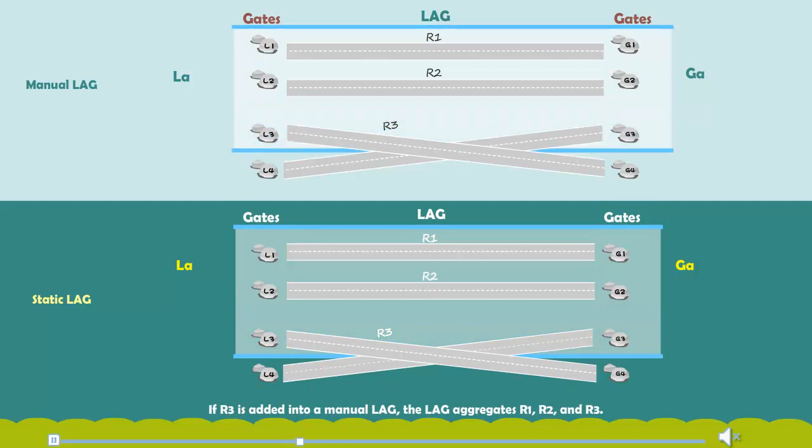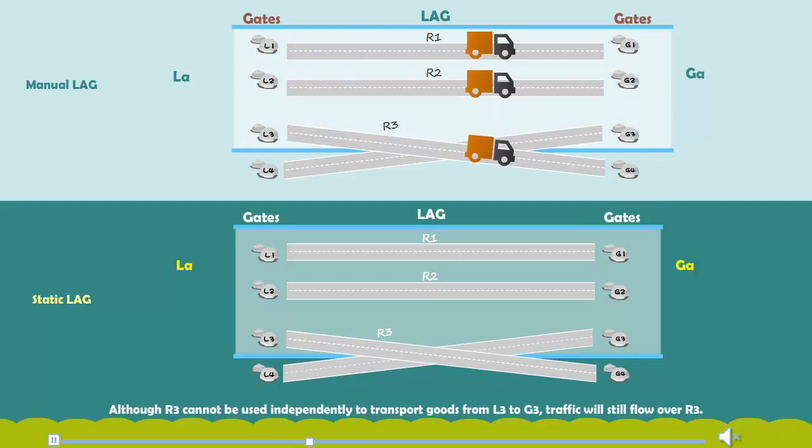If R3 is added into a manual LAG, the LAG aggregates R1, R2, and R3. Although R3 cannot be used independently to transport goods from L3 to G3, traffic will still flow over R3.